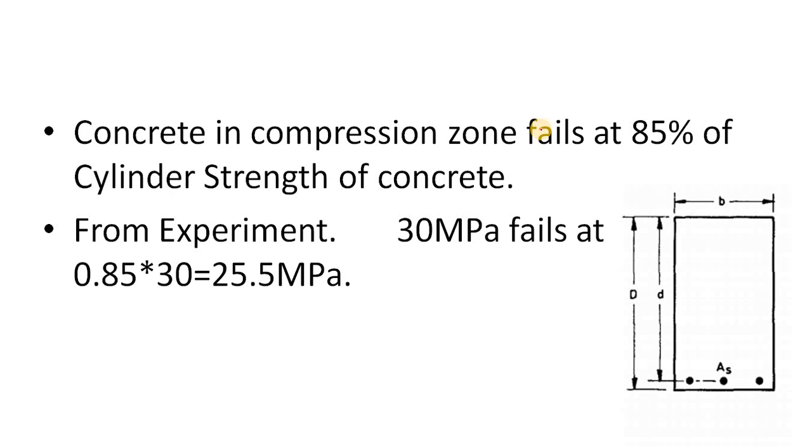From experiment, it has been shown that if this is your concrete section, this is the neutral axis, this is the compressed zone, and this is the most compressed fiber, concrete in the compression zone or the most compressed fiber fails at 85% of the cylinder strength of the concrete.